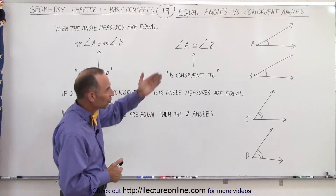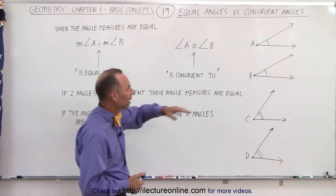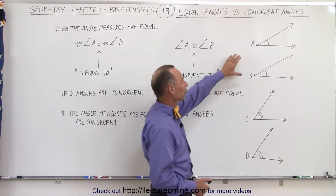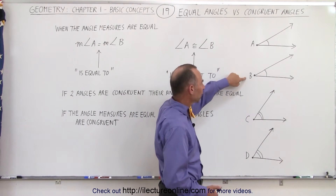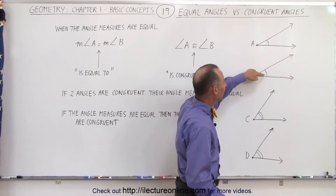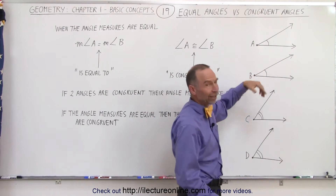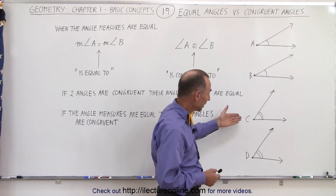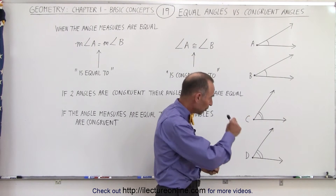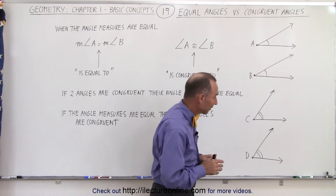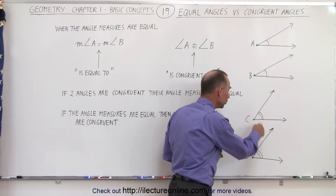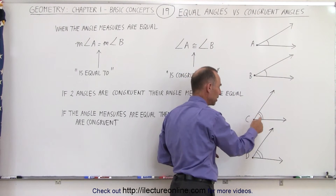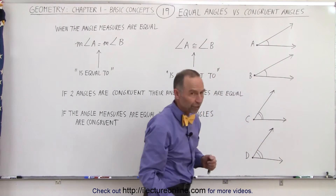So here we have two pairs of angles. We have angle A and B and angle C and D. Now the measure of angle A is equal to the measure of angle B, and that's indicated by the single line in each case — an indication that those two angles have the same measure. Here we have a slightly different symbol: two little arcs that show these two do not have the same angle measure as the first pair, but that the angle measure of C is equal to the angle measure of D.